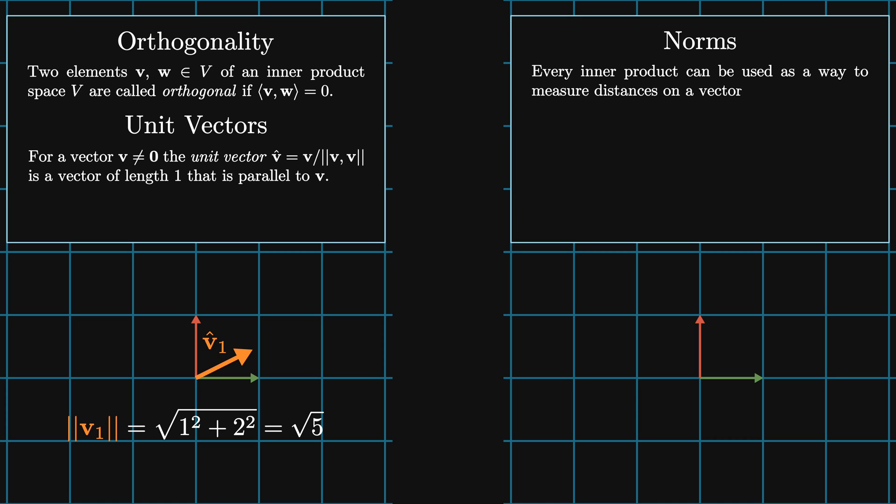Every inner product can be used as a way to measure distances on a vector space. However, many norms that are useful don't come from inner products. For example, the LP norm. The LP norm of v is equal to the pth root of the sum on i of the ith element of v to the pth power.